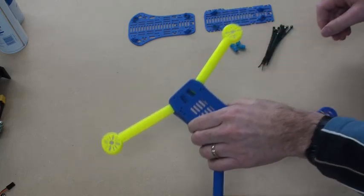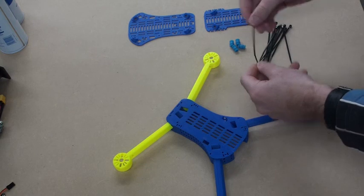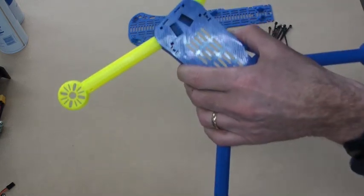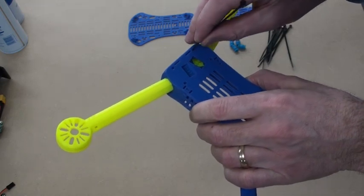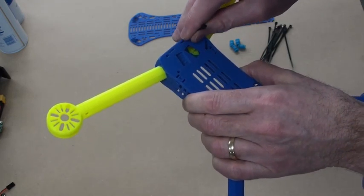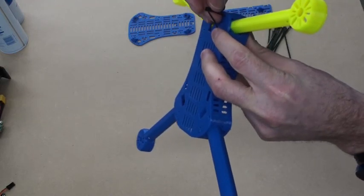So there's one cable tie on each arm, and it just goes into the small slot here, feeds around the arm and back out the other side here, and then we can just do them up.